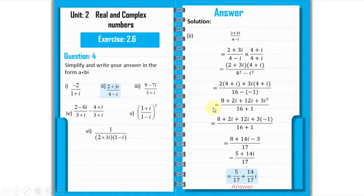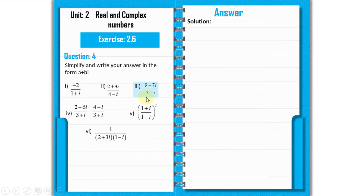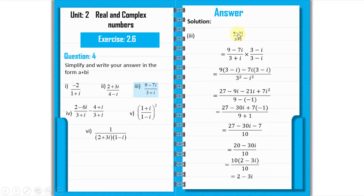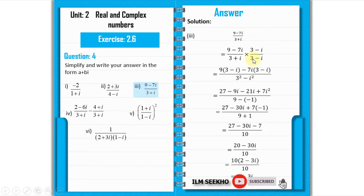Now we solve part 3. We have (9 minus 7 iota) divided by (3 plus iota). We multiply and divide by the conjugate of the denominator, which is (3 minus iota). Expanding: 9 × (3 minus iota) gives 27 minus 9 iota; minus 7 iota × (3 minus iota) gives minus 21 iota plus 7 iota squared.